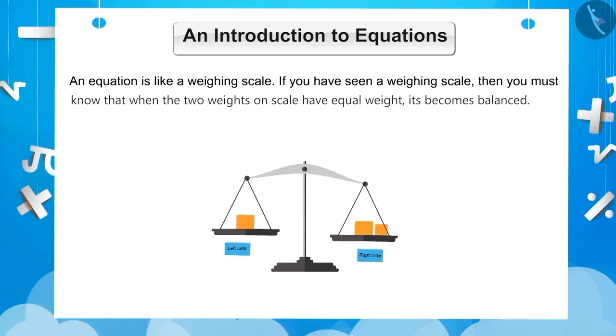If we increase the weight in the right pan, then the left pan rises and the weighing scale is not balanced. The same rule applies to the equation. In a balanced equation, the left side is always equal to the right side.